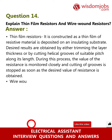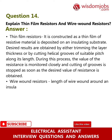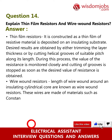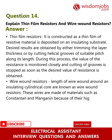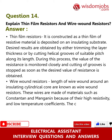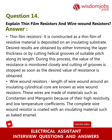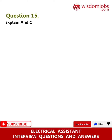Wire wound resistors: A length of wire wound around an insulating cylindrical core is known as a wire wound resistor. These wires are made of materials such as constantan and manganin because of their high resistivity and low temperature coefficients. The complete wire wound resistor is coated with an insulating material such as baked enamel.